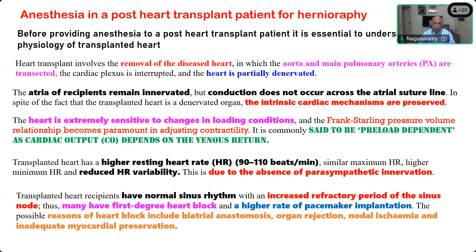Possible reasons for heart block include bi-atrial anastomosis where the innervation has been cut and nerve conduction does not cross the suture line, organ rejection, nodal ischemia, or inadequate myocardial preservation. Clinically significant atrial and ventricular arrhythmias are quite frequent, and ectopic beats are also common. Ventricular arrhythmia may indicate acute rejection or allograft coronary artery vasculopathy.